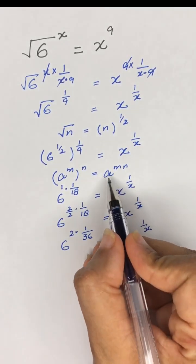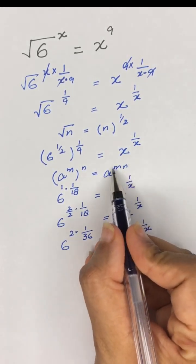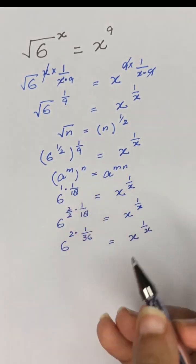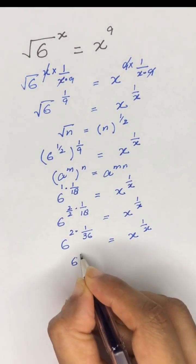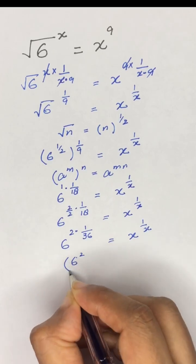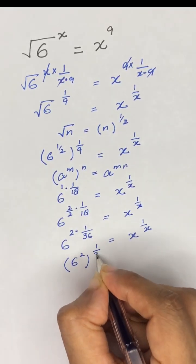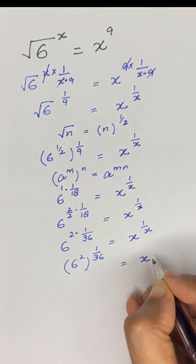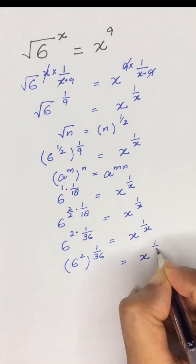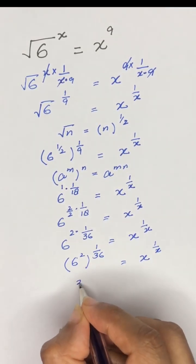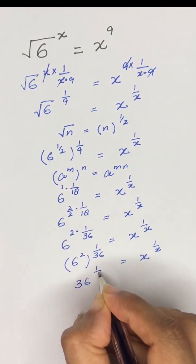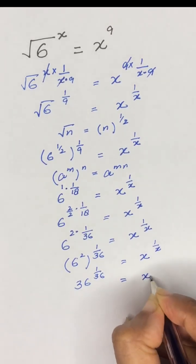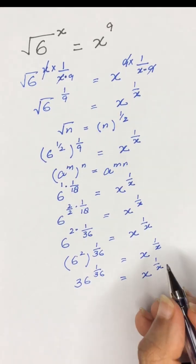Now it is in the form of a to the power mn, so I will write it as a to the power m, whole power n. So it will become 6 squared, and its power 1 divided by 36, is equal to x to the power 1 divided by x. And 6 squared is the same as 36, so 36 to the power 1 divided by 36 is equal to x to the power 1 divided by x.